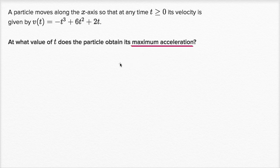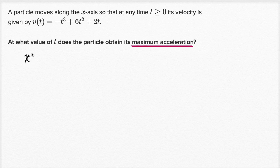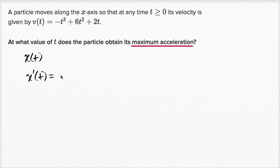We want to figure out when the particle obtains its maximum acceleration. Let's review what they gave us — velocity as a function of time. If we have x(t) as position as a function of time, then x'(t) is the rate of change of position with respect to time, or the velocity as a function of time.